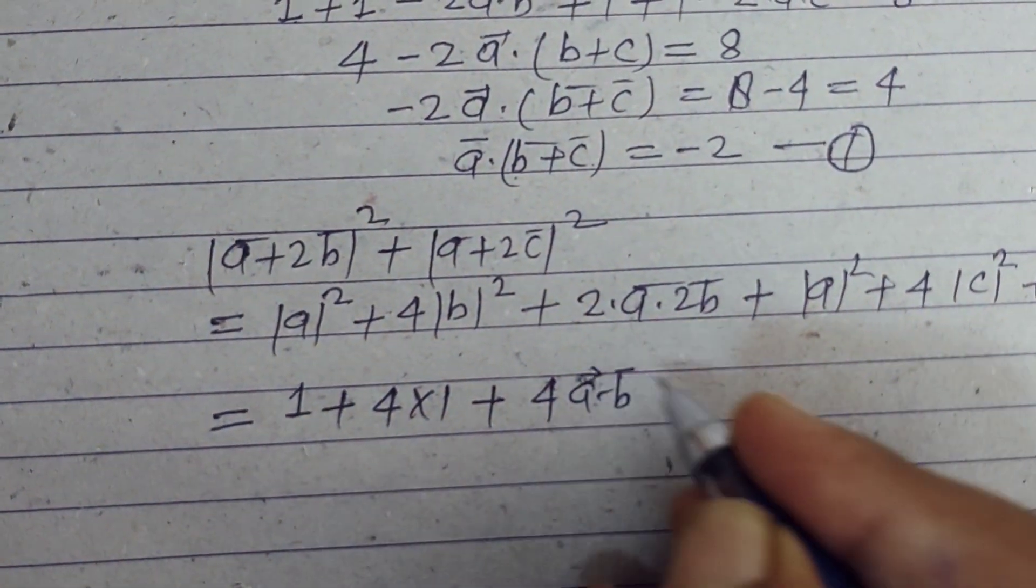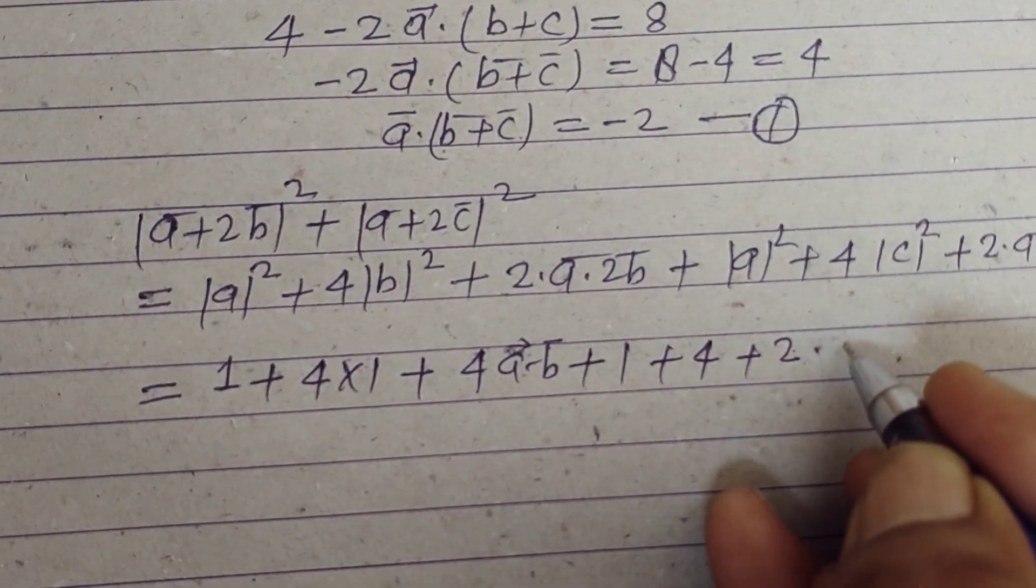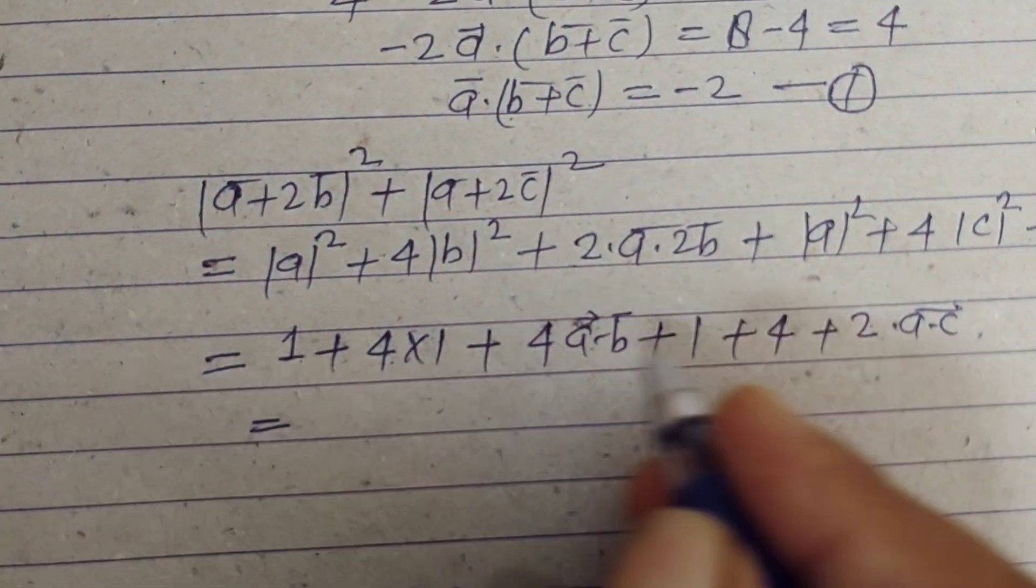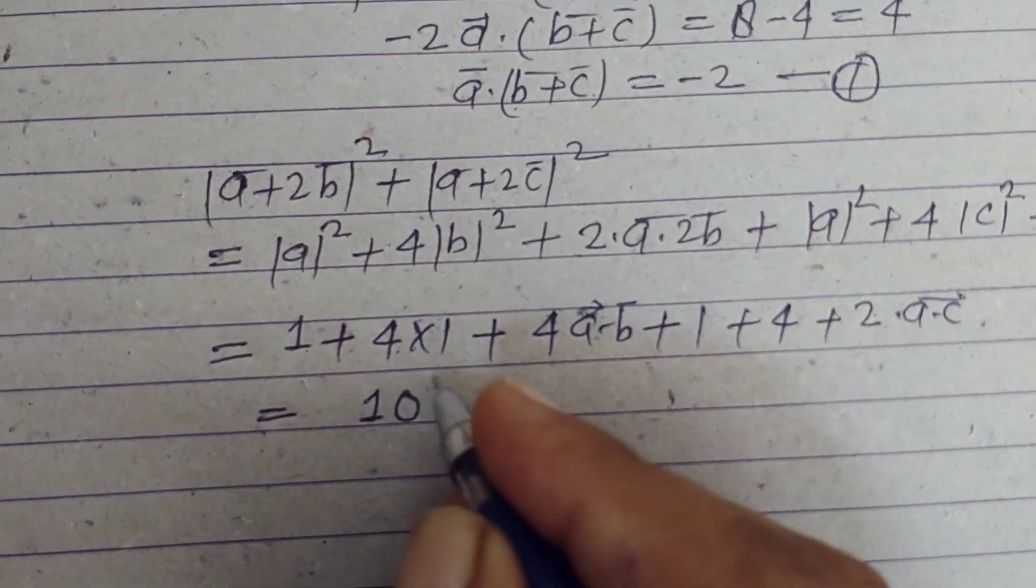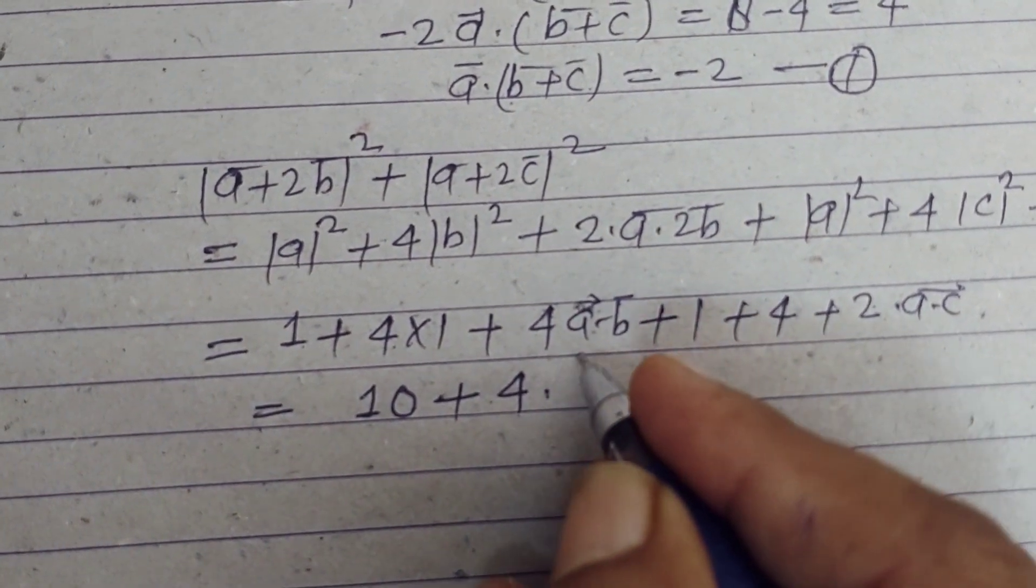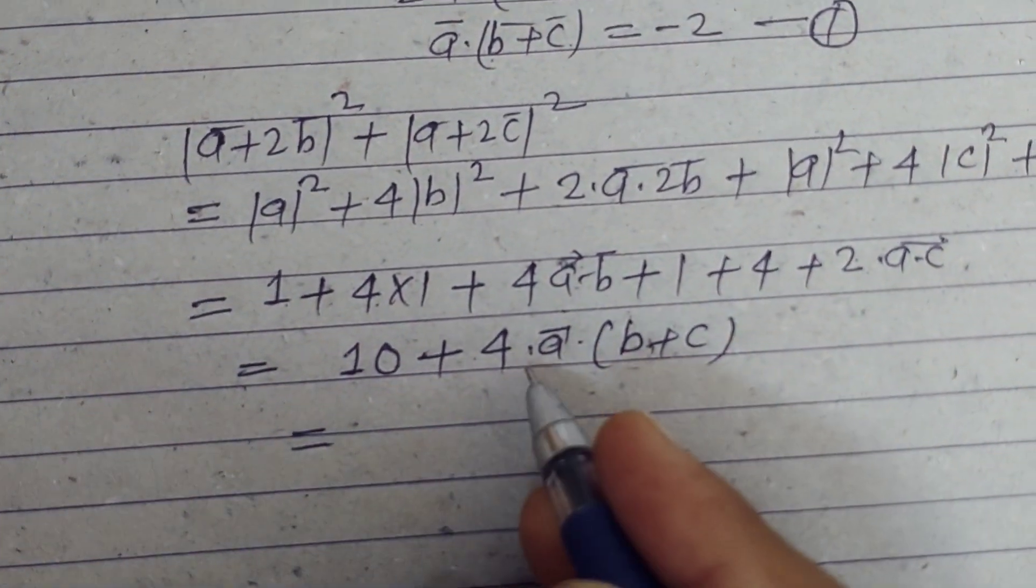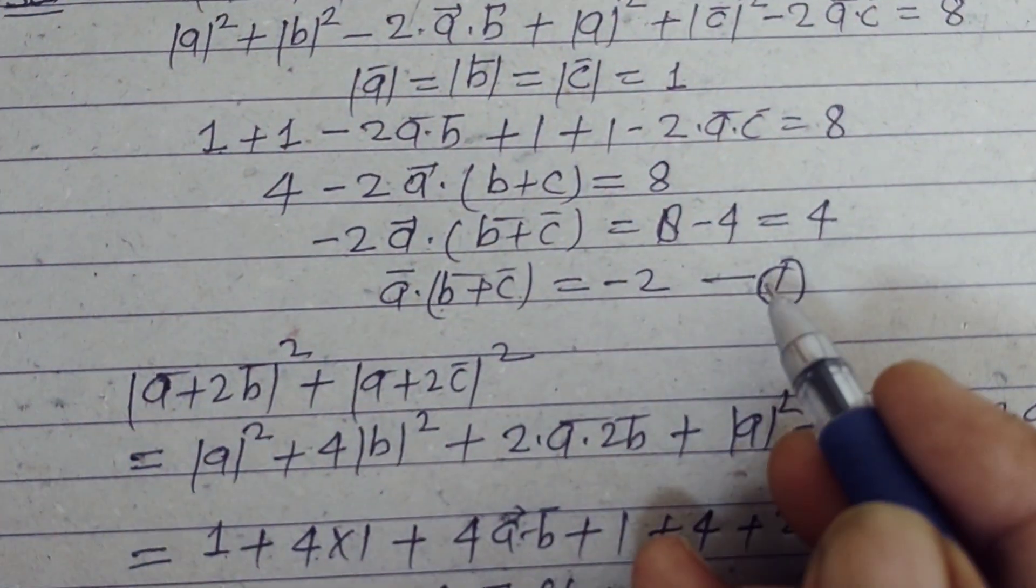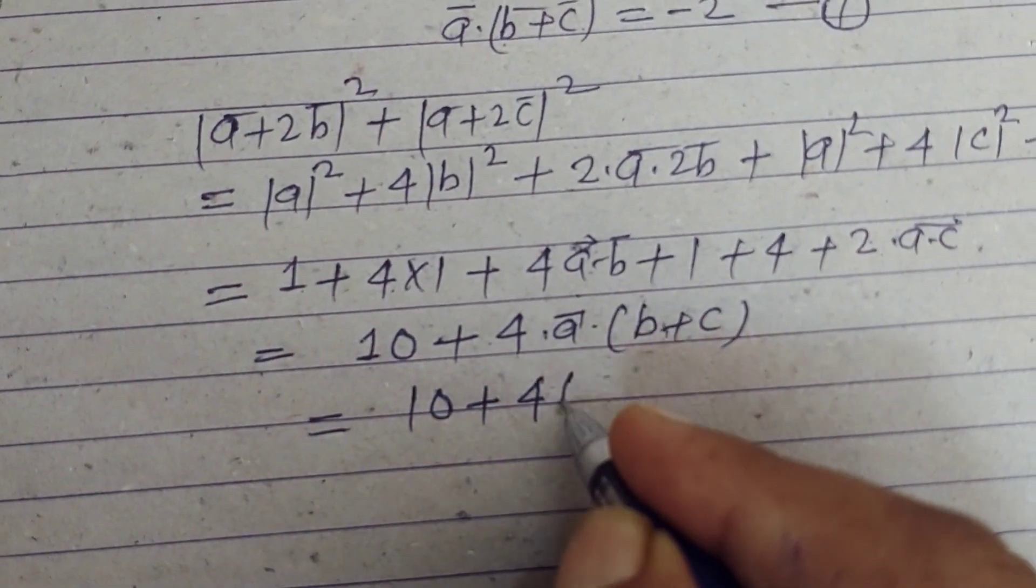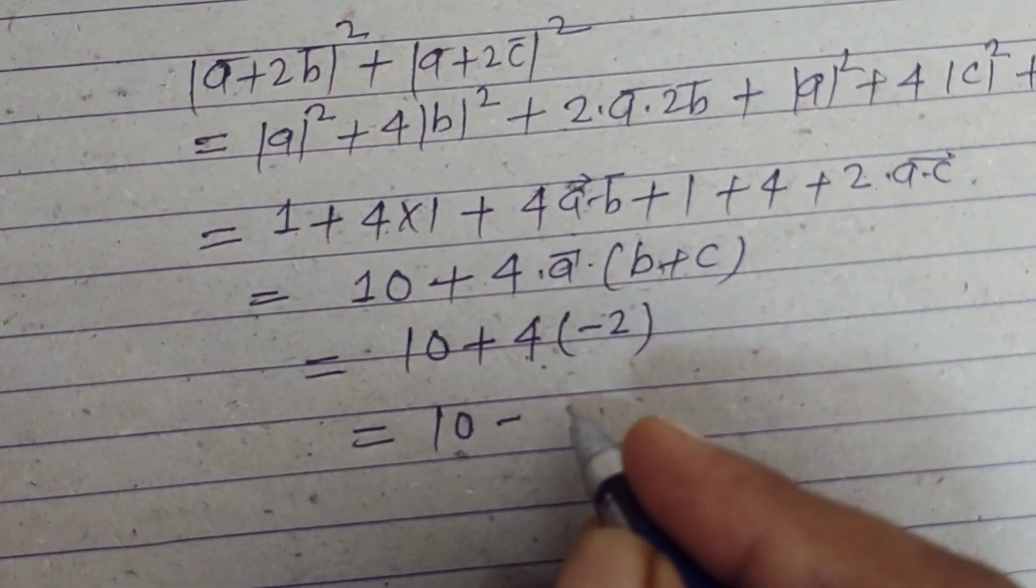a dot b, this is 1, this is 4, and this is 2 times a dot c, so 1 and 1 is 2, and this is 4 plus 4 is 8, 10, 4, 4, 8, 8 plus 2 is 10, 10, 4 times a is common in this, a dot (b plus c). So putting the value of a dot (b plus c) from first, we got 10 plus 4 into minus 2, and this is 8 minus 8.